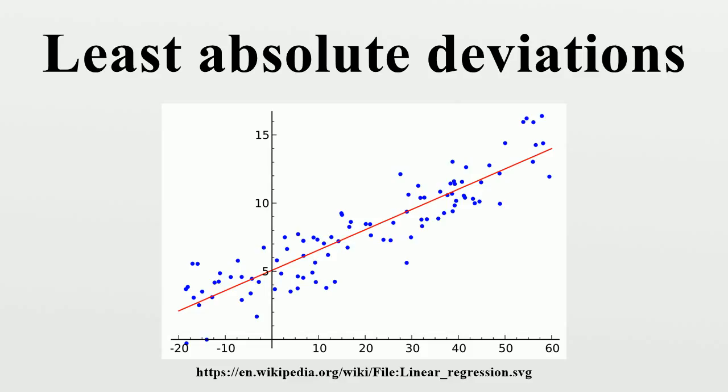There exist other unique properties of the least absolute deviations. In the case of a set of data, the least absolute deviations line will always pass through at least two of the data points, unless there are multiple solutions. If multiple solutions exist, then the region of valid least absolute deviations solutions will be bounded by at least two lines, each of which passes through at least two data points.